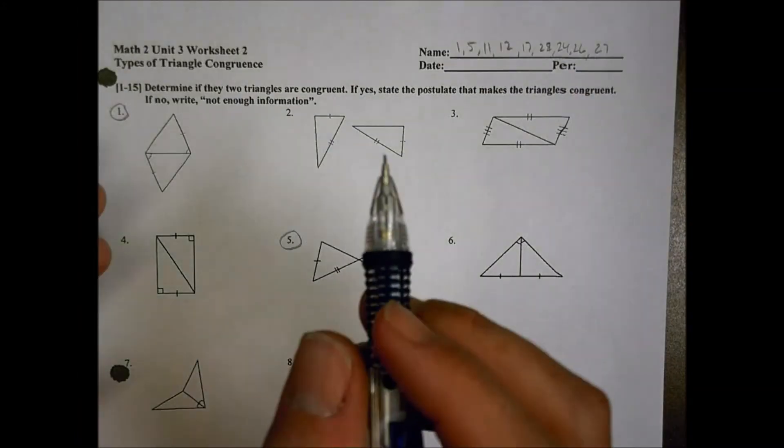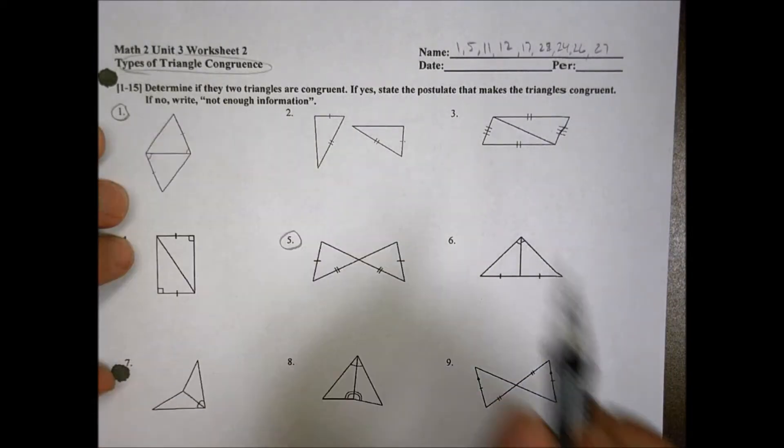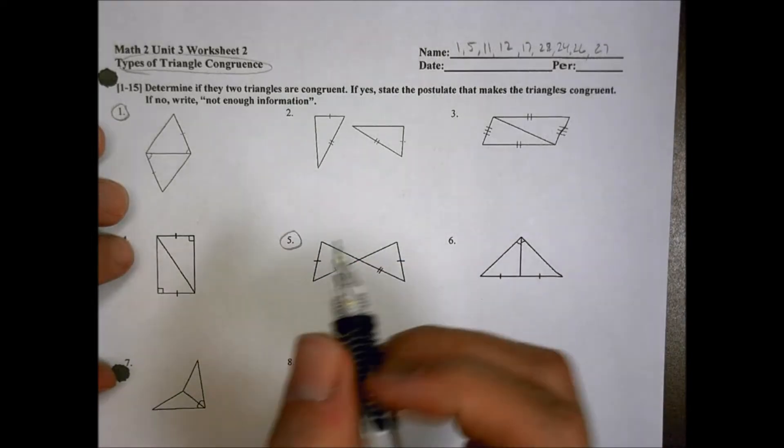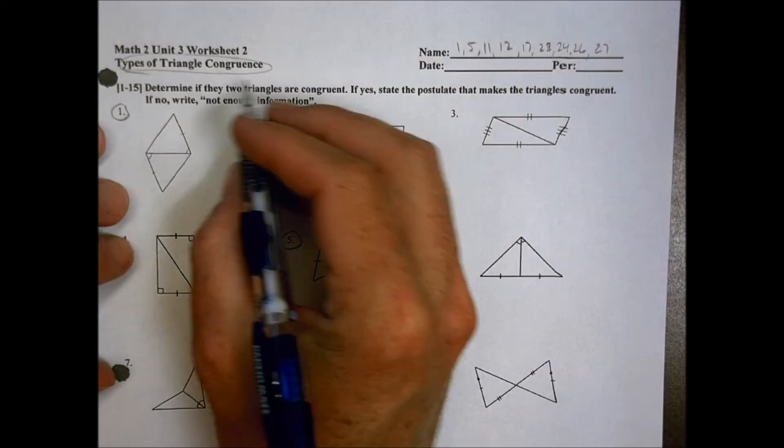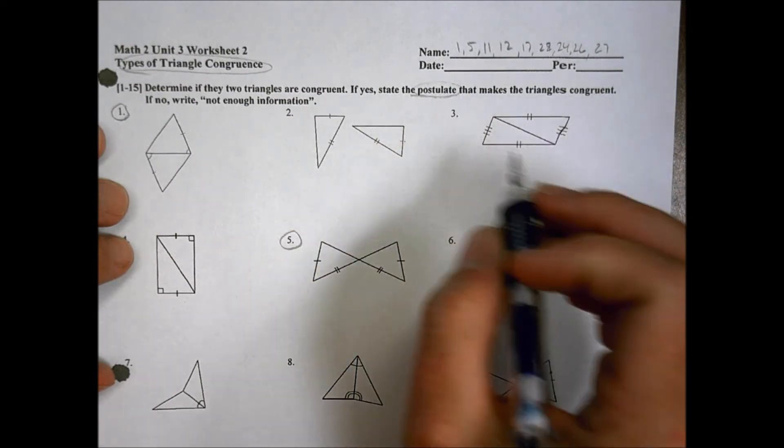Hey, this is Math 2, Unit 3, Worksheet number 2, talking about types of triangle congruence. Now, I wasn't in class today to hear exactly all you were talking about to see how you would prove these, because it wants to know which postulate you'd use to prove that they are congruent.